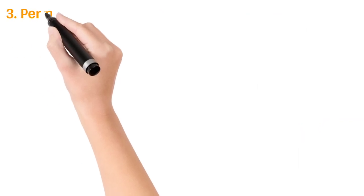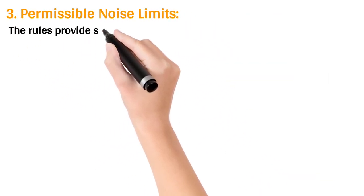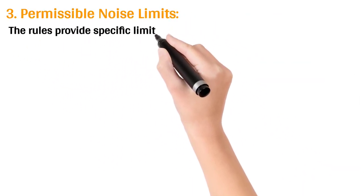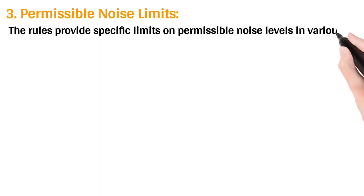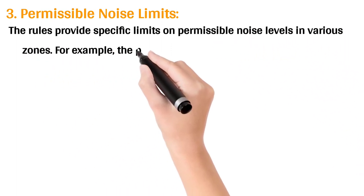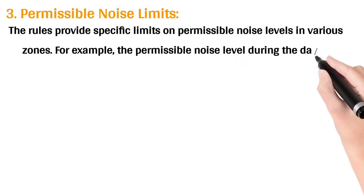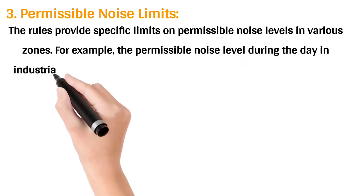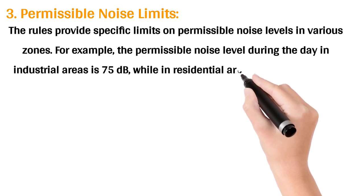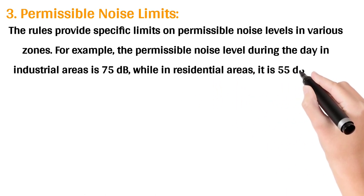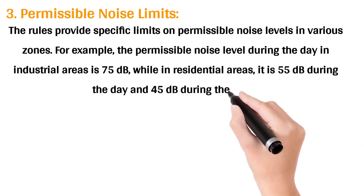3. Permissible Noise Limits: The rules provide specific limits on permissible noise levels in various zones. For example, the permissible noise level during the day in industrial areas is 75 dB, while in residential areas it is 55 dB during the day and 45 dB during the night.